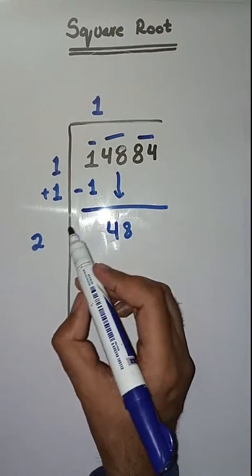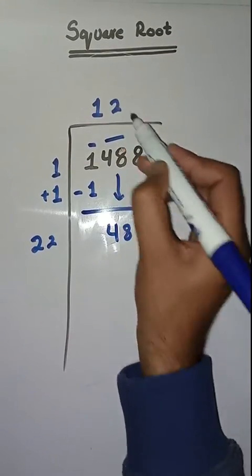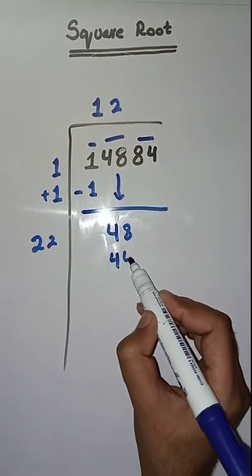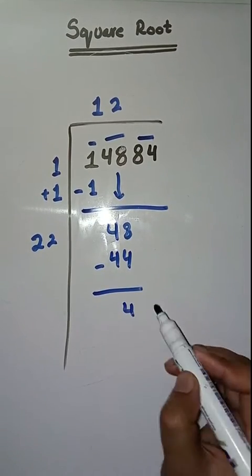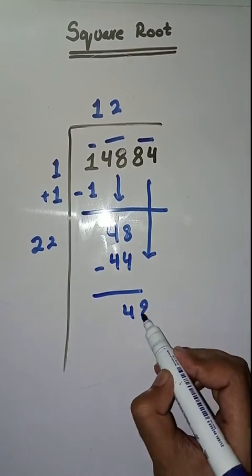We will take a number 2. Two zero forty four, two zero forty four, minus karenge, hamare paas karega eight minus four four. Next pair hamare paas eighty four, isko hame niche lehenge.